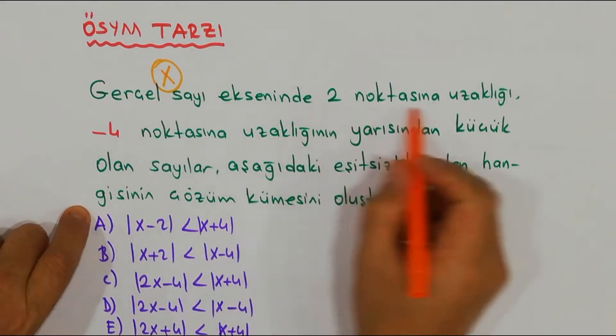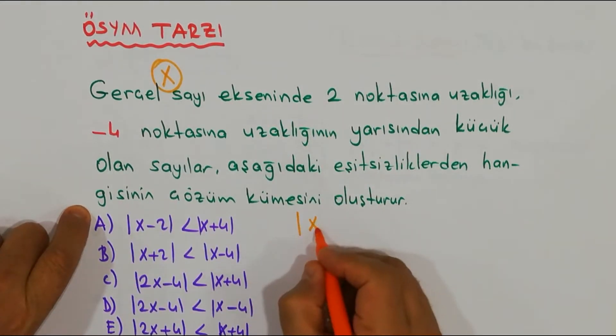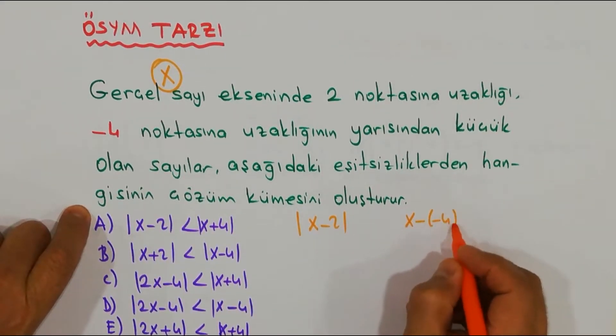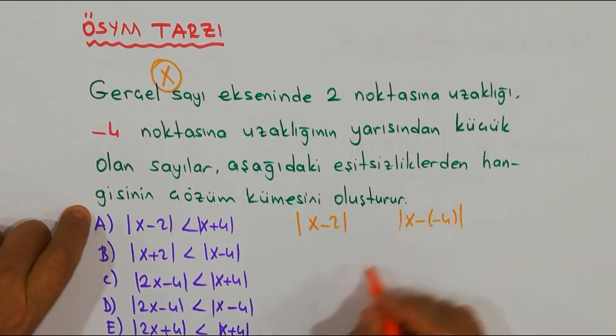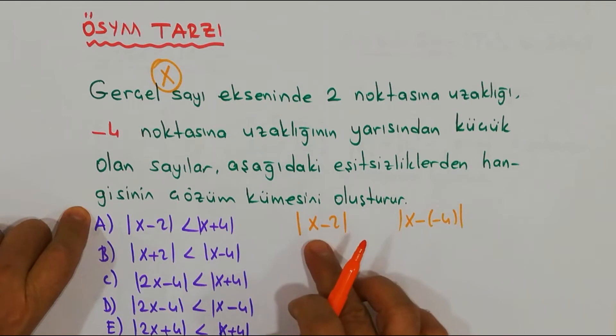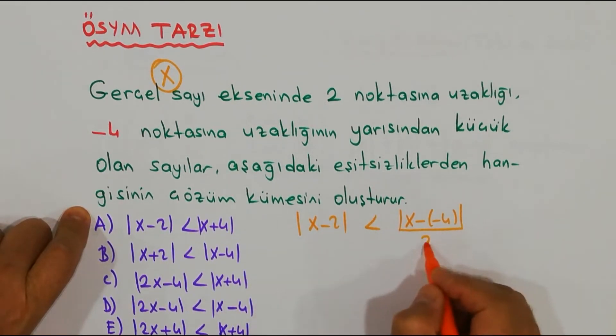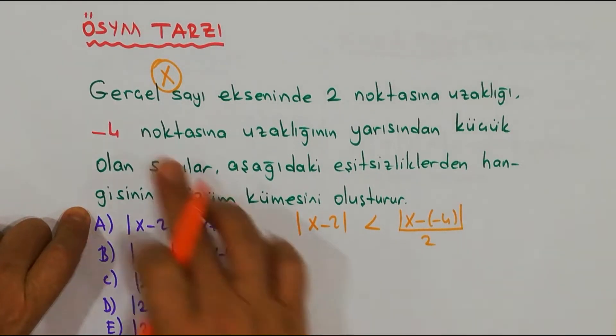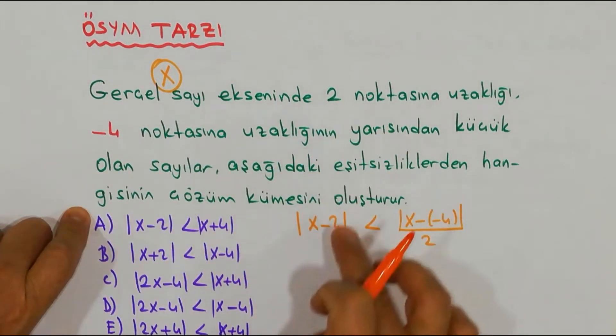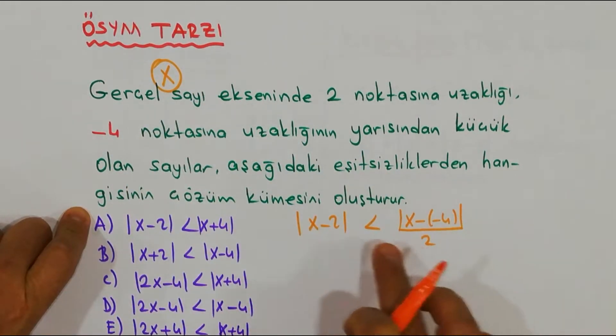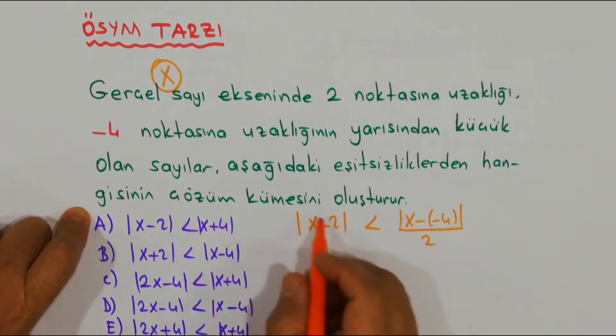Değerli arkadaşlar, sayımız ne olsun? x olsun. 2 noktasına olan uzaklığı |x - 2| olmaz mı? Peki eksi 4 noktasına olan uzaklığı - dikkat et - |x - (-4)|. Diyor ki yarısından, yani bu bunun yarısından küçükmüş, öyle değil mi?